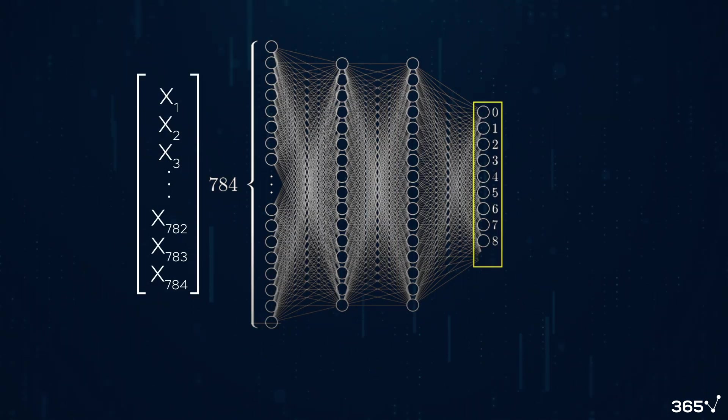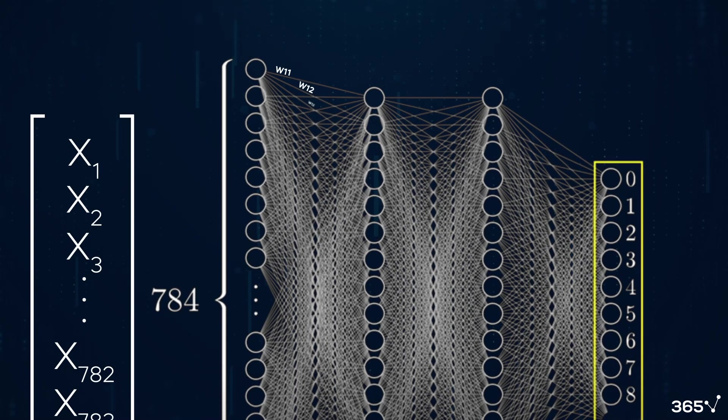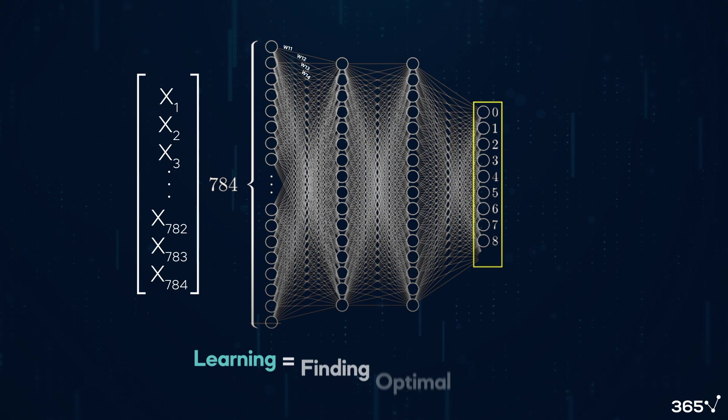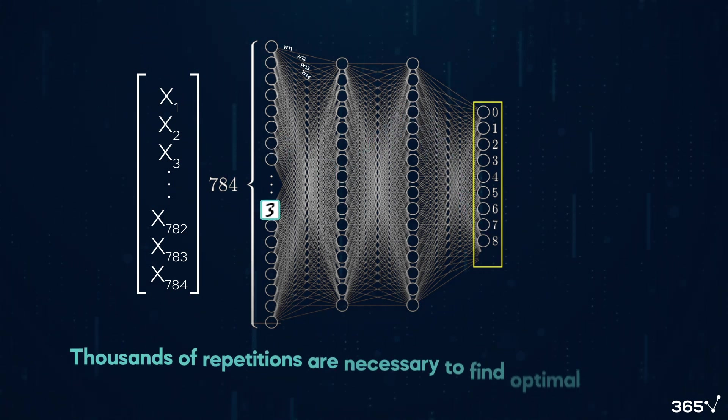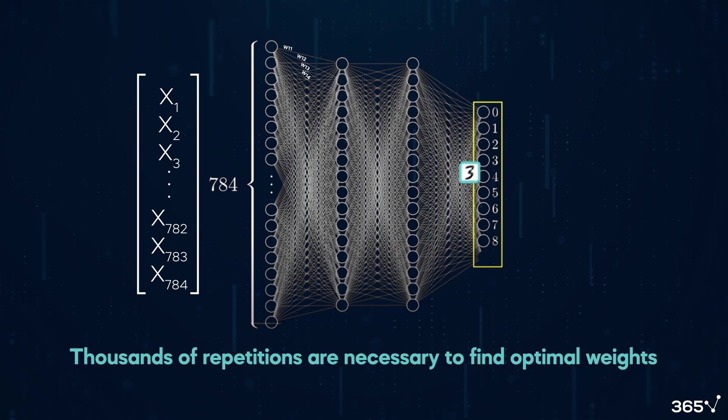This method translates the input via various layers, refining the information before it generates a result. Learning occurs by designing a system that identifies optimal weights and biases to solve a specific problem, involving thousands of repetitions to discover the best combination.